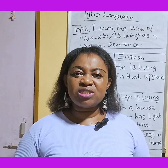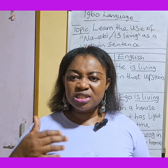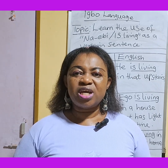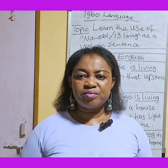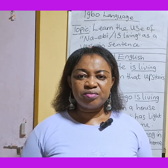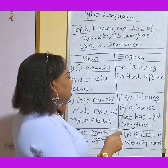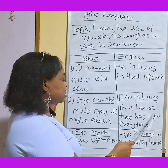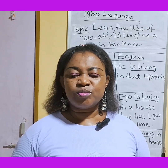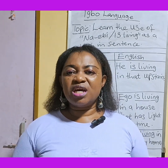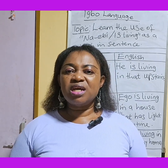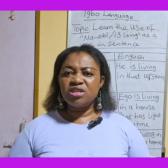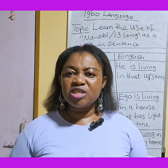Nebi tells us that Ergo always lives in a home that has light. It means Ergo is living in a house that has light every time. So Ergo likes living in a place where there is light.